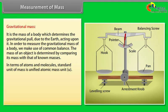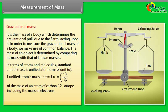The mass of an object is determined by comparing its mass with that of known masses. In terms of atoms and molecules, the standard unit of mass is unified atomic mass unit, that is U. One unified atomic mass unit is equal to 1U, equal to 1 upon 12 of the mass of an atom of carbon-12 isotope including the mass of electrons, equal to 1.66 into 10 raised to the power minus 27 kg.